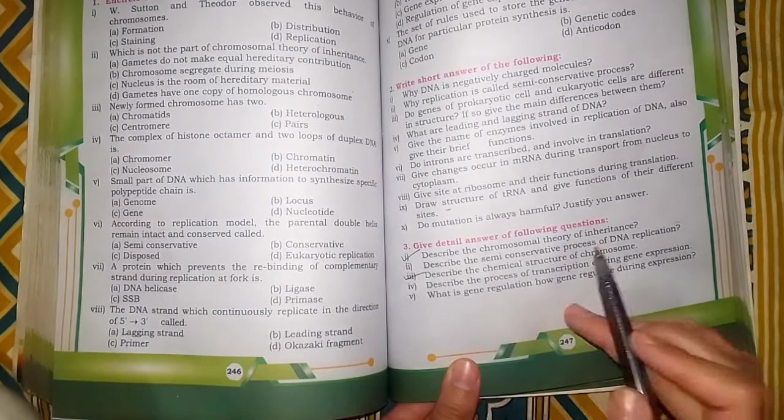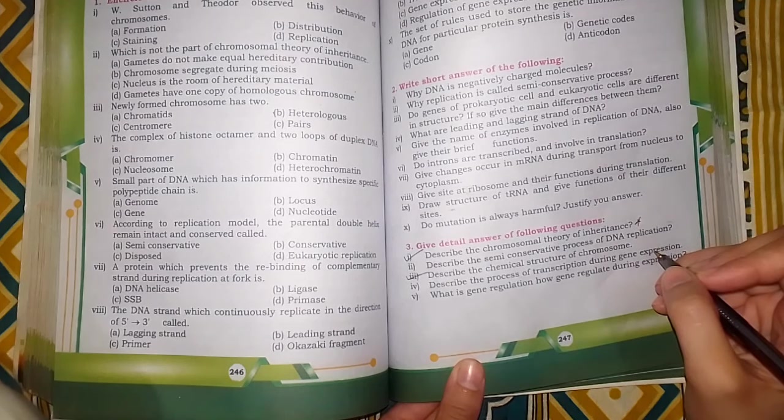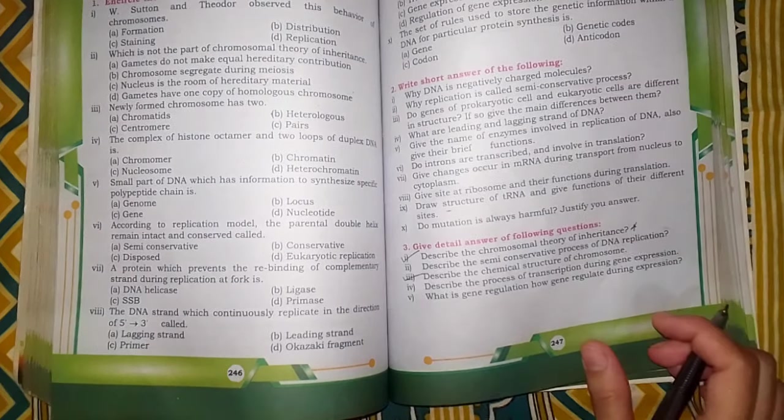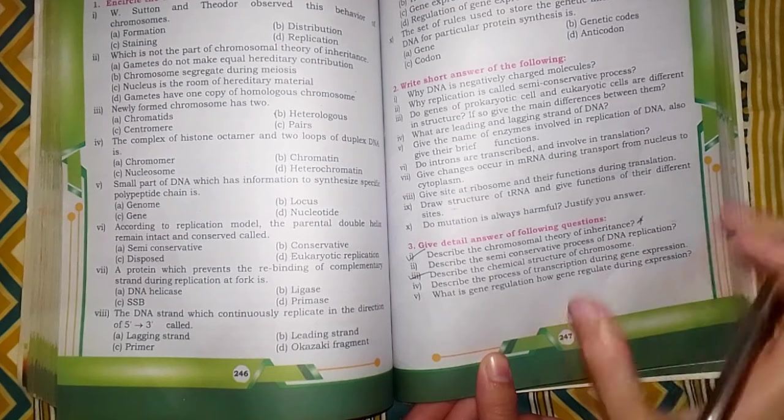One is chromosomal theory of inheritance. This is most important for your board exam 2024. And you have to do semi-conservative process of DNA replication.